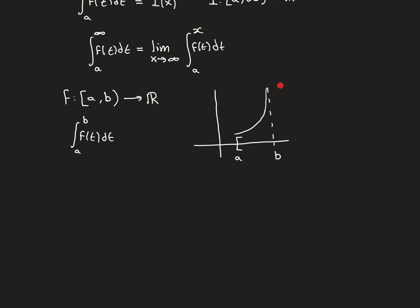This is the sort of picture we're now considering: functions with asymptotes, unbounded either in the positive or negative direction. We have a function defined over the interval [a, b), including its lower bound but not b, because the asymptote is at b. The picture has the function unbounded in the positive direction, but you could also consider the function going off to negative infinity as you approach b.